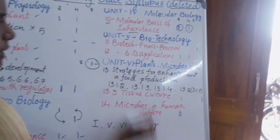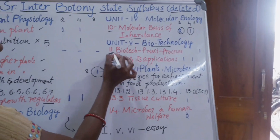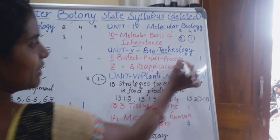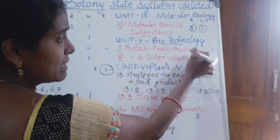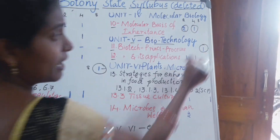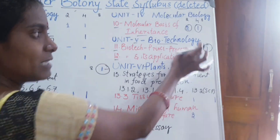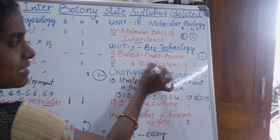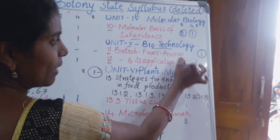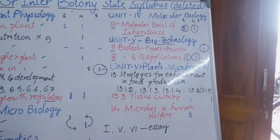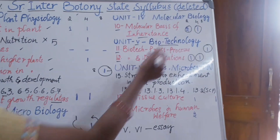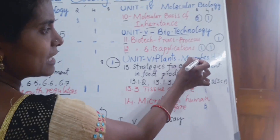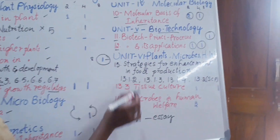Coming to the fifth unit, Biotechnology. Under this there are two chapters — chapters 11 and 12. From chapter 11, Biotechnology Principles and Processes, one essay question will come, so you should be careful about this chapter. From Biotechnology and Its Applications, one two-mark and one four-mark question will come.